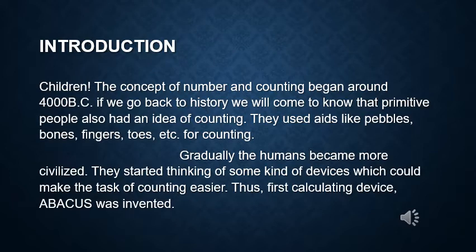Children, you are familiar with the counting method using your fingers. The concept of number and counting began around 4000 BC. If we go back to history, we will come to know that primitive people also had an idea of counting. They used aids like pebbles, bones, fingers, and toes for counting. Gradually, humans became more civilized and started thinking of devices to make counting easier. Thus, the first calculating device, Abacus, was invented.